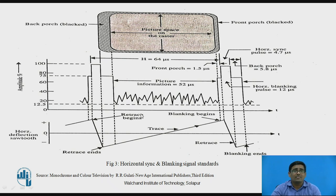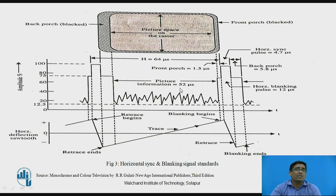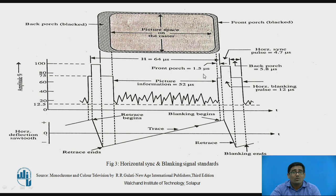This shows the horizontal sync and blanking signal standards. The total horizontal sync pulse required is 64 microseconds. Out of this, the picture information occupies 52 microseconds and the remaining 12 microseconds are used for the horizontal blanking pulse. The horizontal blanking pulse consists of three parts: front porch requiring 1.5 microseconds, horizontal synchronization pulse requiring 4.7 microseconds, and back porch requiring 5.8 microseconds.